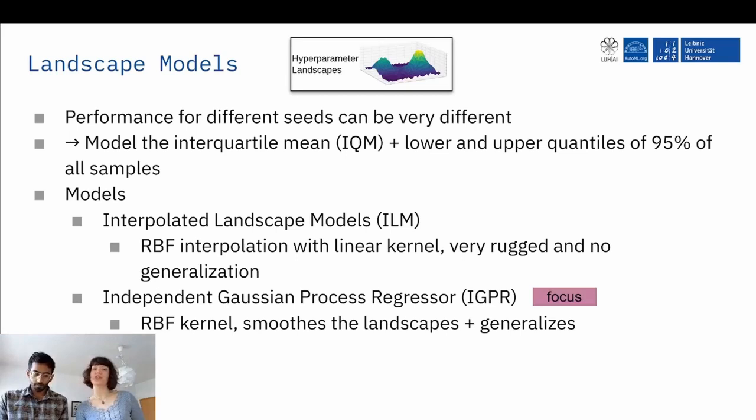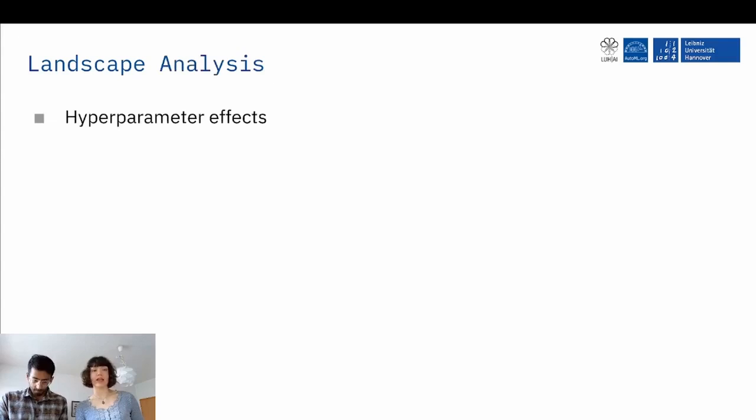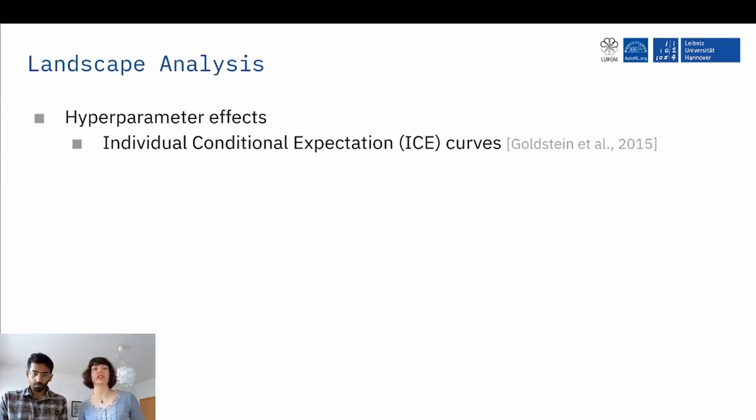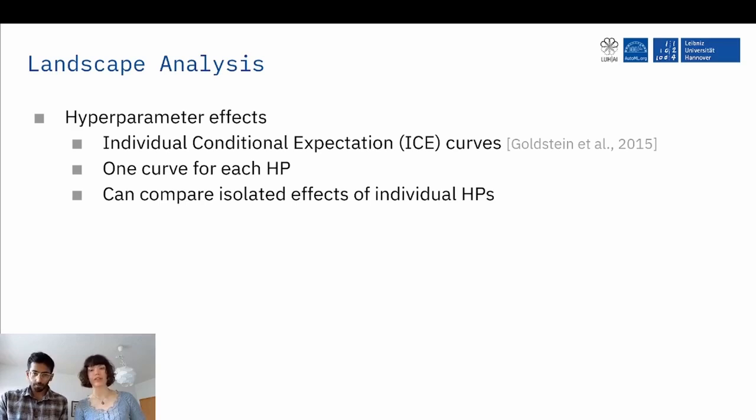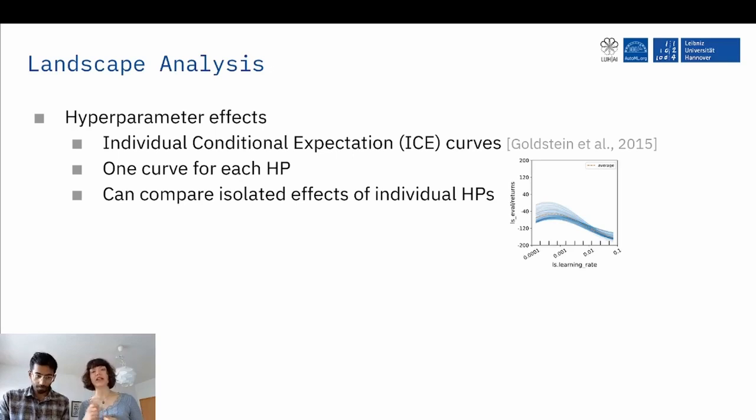So if we have now those models, we can perform further analysis on the landscape. So, for example, we can study the hyperparameter effects using individual conditional expectation ICE curves from Goldstein. And there we have one curve for each hyperparameter and we can compare isolated effects of individual hyperparameters. We have a small example here. So, for example, for the learning rate, we see that we don't have a linear relation to the values of the learning rate, but we have a peak somewhere, so an optimum and a non-optimum.